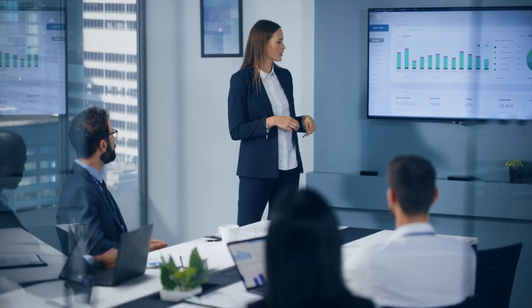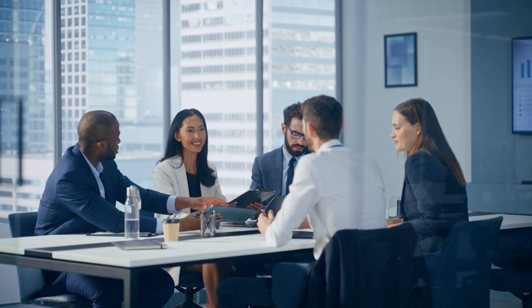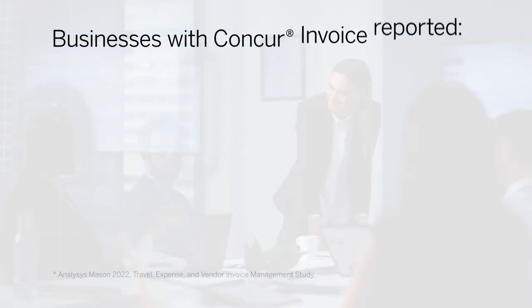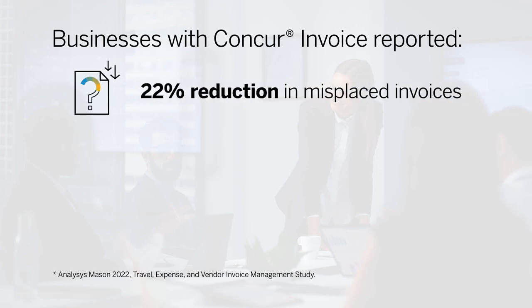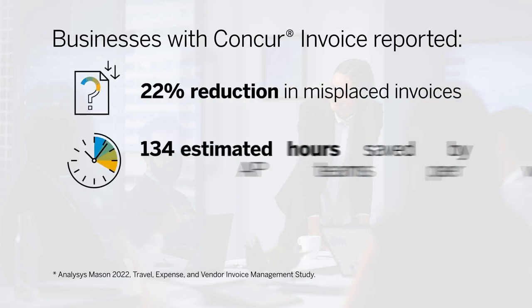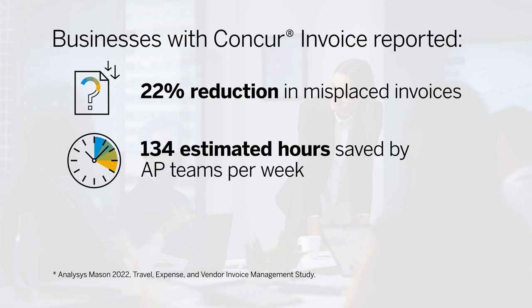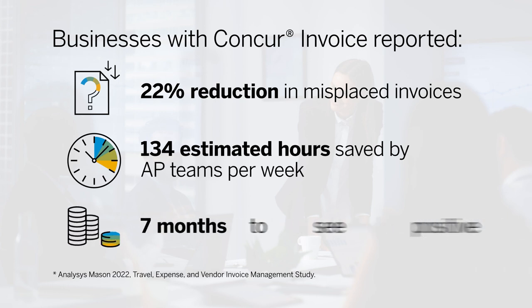Company leadership cares about total value, ROI, and securing consensus from all leaders in the organization. Paint a clear picture using case studies, third-party reviews, and user statistics. For example, businesses with Concur Invoice reported a 22% reduction in misplaced invoices, 134 estimated hours saved by AP teams per week, and only seven months to see positive ROI.